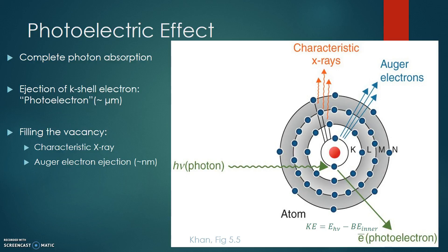After the ejection of the photoelectron, there is a vacancy in the K shell of the atom. To fill this vacancy, an electron from an outer shell will drop down to the K shell, causing an excess of energy in the atom. To return to equilibrium, the atom will either emit a characteristic X-ray, seen in orange, or eject an Auger electron, seen in blue. Since the energy of the Auger electron is only the difference in binding energies between the K shell and the outer shell, it will have a much lower kinetic energy than the photoelectron and thus a range on the order of nanometers.